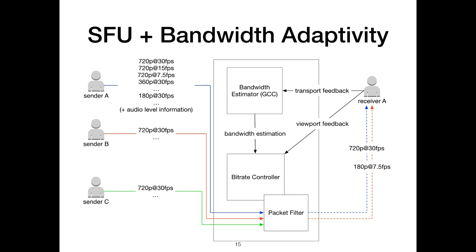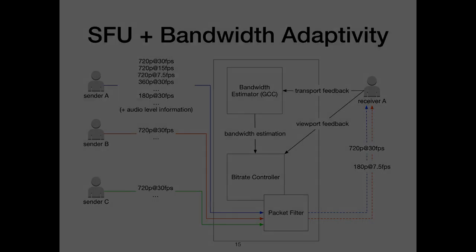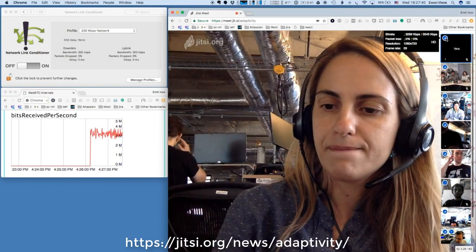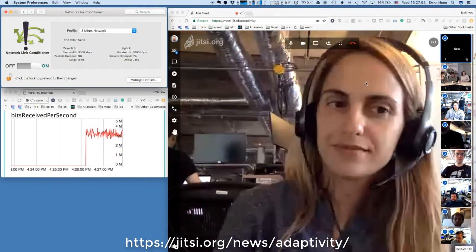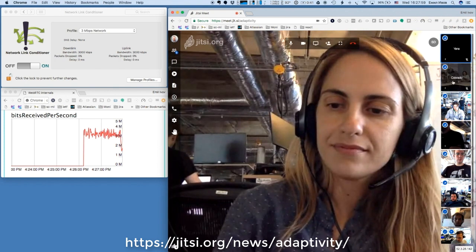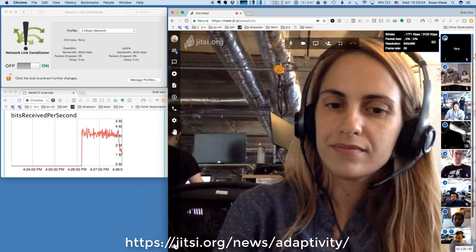We have implemented in the bridge an iterative improvement algorithm that orchestrates all these techniques. It takes as input the active speaker list, the viewport layout at the receiver, and the bandwidth estimation produced by our GCC implementation, and it computes an optimal streaming configuration in terms of user experience. In this specific example, the receiver is getting 720p at 30fps, 180p at 7.5fps, and the third participant is not being received at all. We have prepared a demonstration video that shows how adaptivity works in practice — how the bridge adjusts the simulcast layers and Last N to adapt to the available bandwidth.